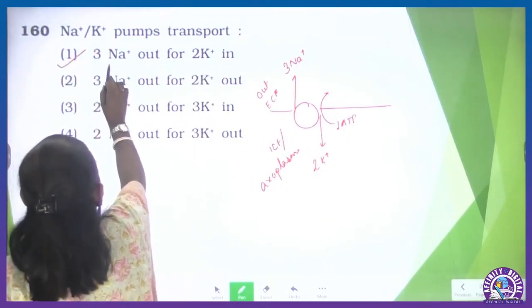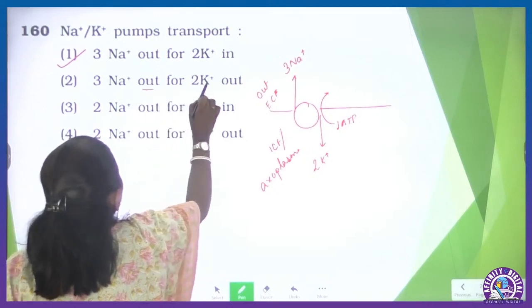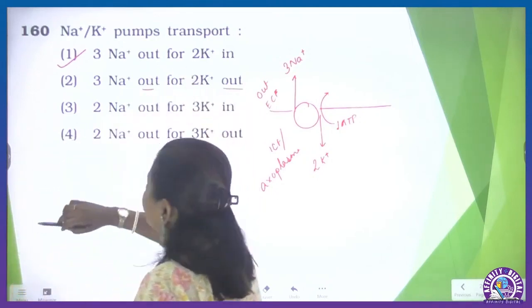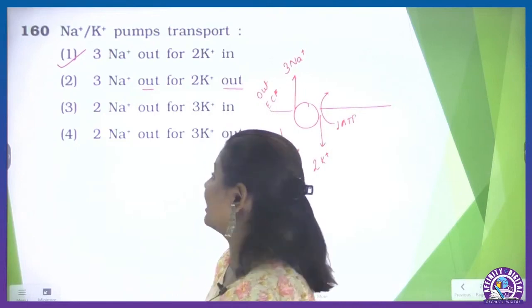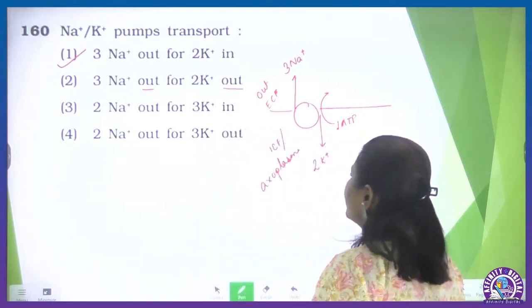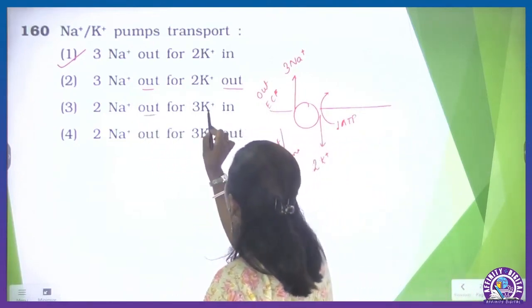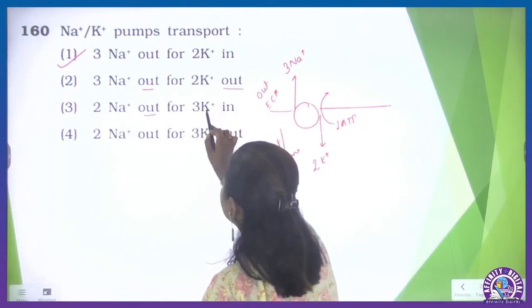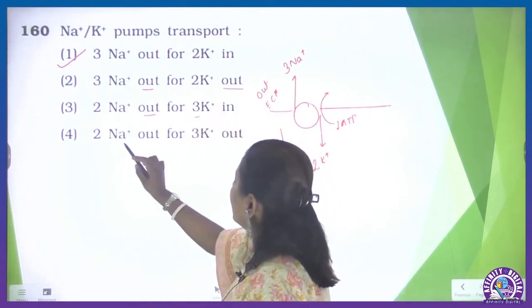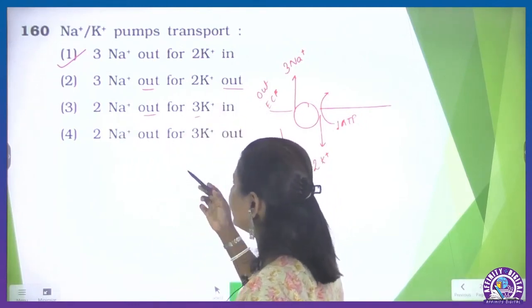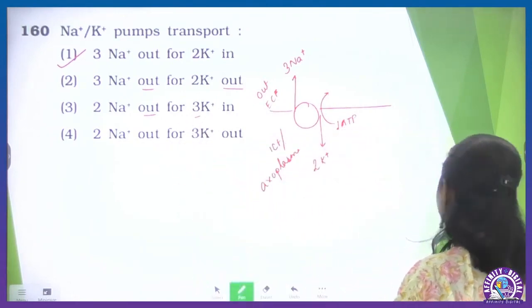One option shows 3 sodium ions outside and 2 potassium ions also outside — so this is definitely not the correct option. Another option incorrectly states numbers or mixes up inside/outside. So be careful when reading those options.